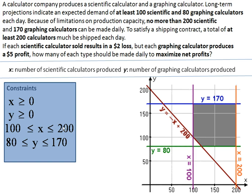And for the graphing calculators, somewhere between 80 and 170 is the demand. And we've got one more thing for the shipping contract—it says you have to ship at least 200 total calculators. So when you add your graphing and your scientific, it needs to be at least 200.